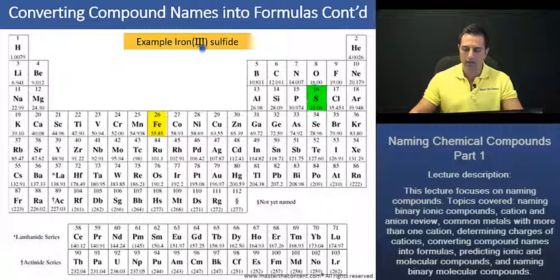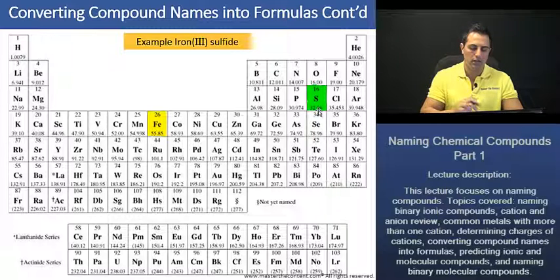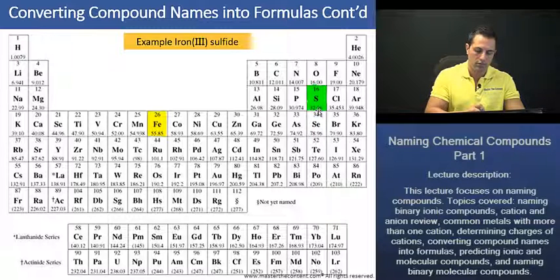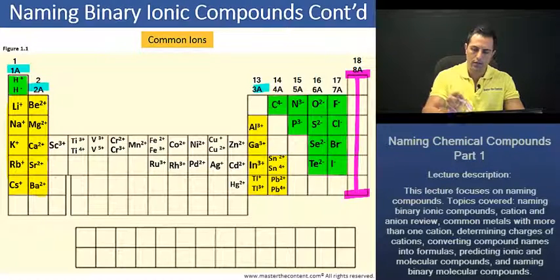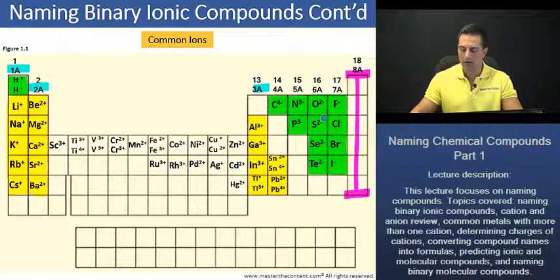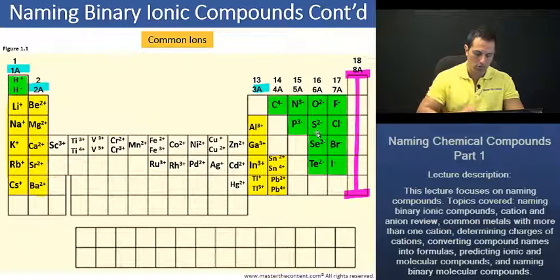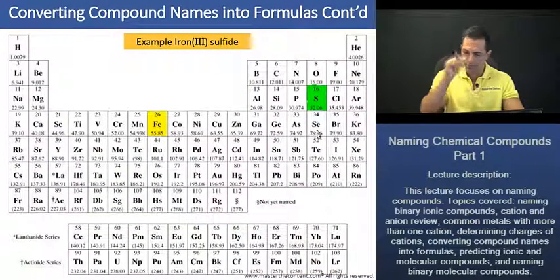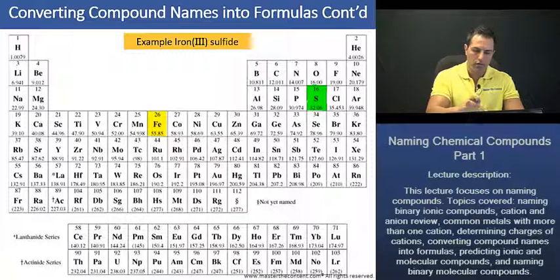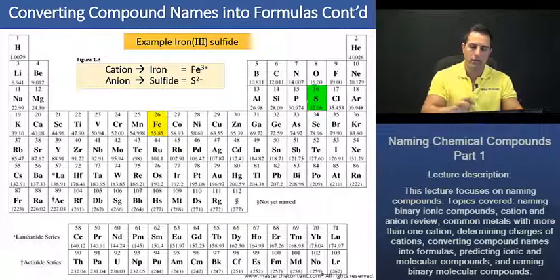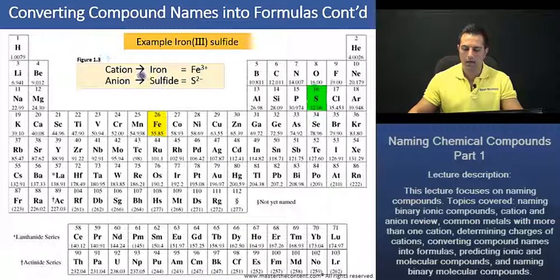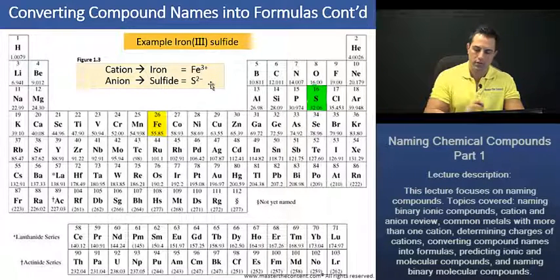The iron is going to have, in the parentheses, a plus-three charge. The sulfide anion is from main group six. And we know that main group six anions have a negative two charge. Recall this slide just a few moments ago when we had taken a look. As you see here, we're going to have a negative two charge. So we have the following cation and anion with the following charges.